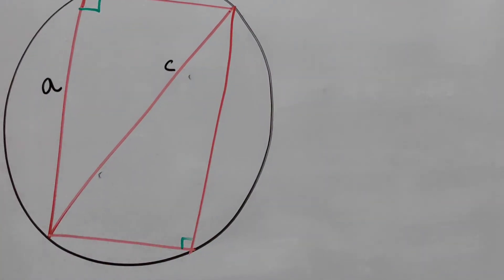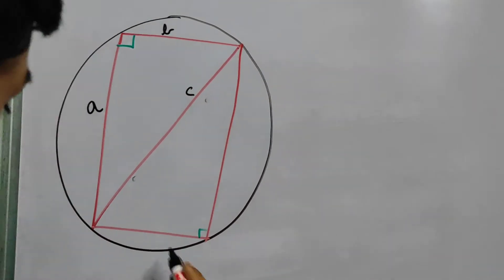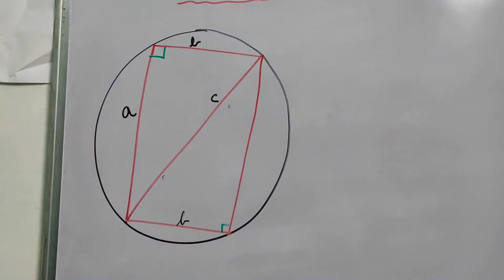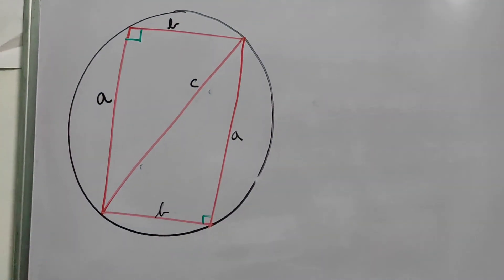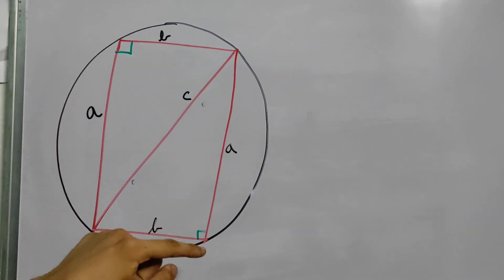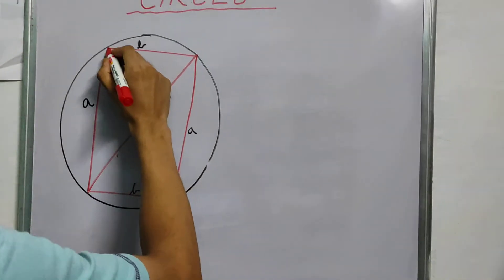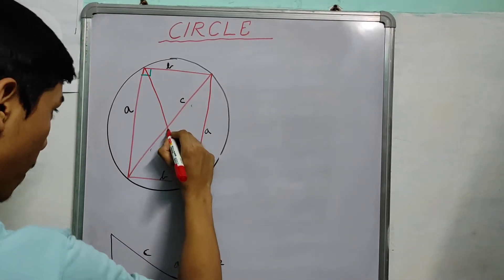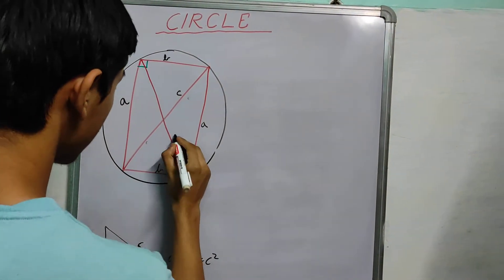We get this angle will also be 90 degrees because this is a diameter. This will be B, and this side will be A. And also, we will construct this diagonal. But this diagonal will be nothing but C again. So there you go, this will also be C.